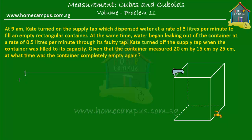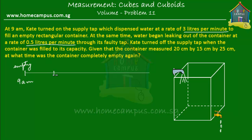At 9 a.m. the container was empty and that's when Kate turned on the supply tap. Water began flowing into the container and the container started to get filled. At the same time there was a faulty tap through which water began leaking out. The rate at which water was flowing in was 3 liters a minute and the rate at which water was leaking out was 0.5 liters a minute, which means more water was flowing in than out. So at some point the container was filled to its capacity.